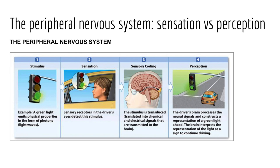Our textbook illustrates sensation and perception with a four-part stoplight example. First, we see a stimulus — a color on a stoplight. The driver's eyes detect the color green via sensory receptors. That information travels along afferent pathways to the brain, where a control center processes and understands it. Finally, we perceive the meaning of that green light and move through the intersection.